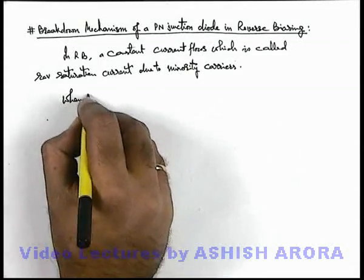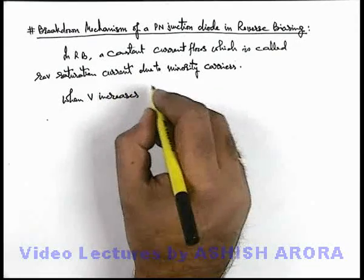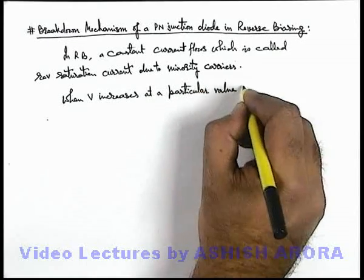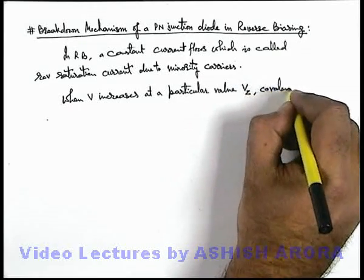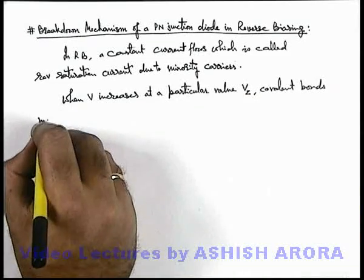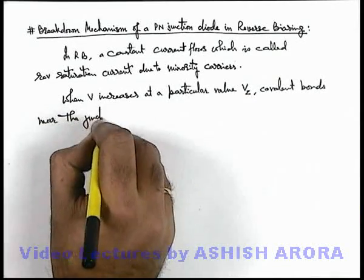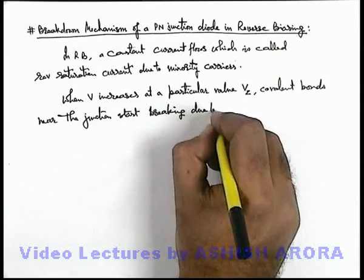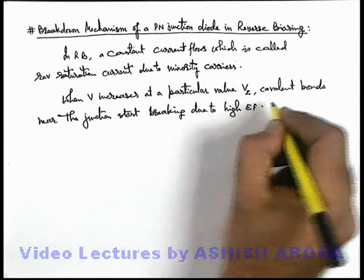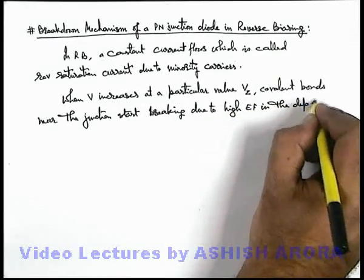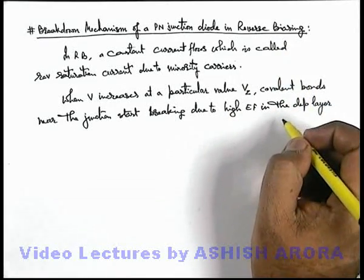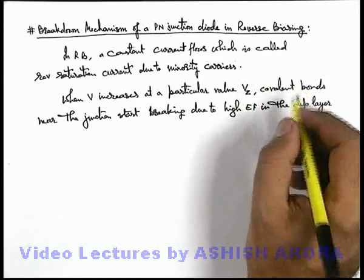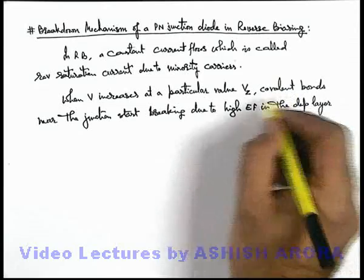When voltage V increases, at a particular value denoted by Vz, covalent bonds near the junction start breaking, which is due to the high electric field in the depletion layer. As we have discussed, in reverse biasing the external electric field supports the internal electric field, and the overall electric field increases. At a specific value Vz or beyond this, the electric field becomes so high that covalent bonds near the junction start breaking.